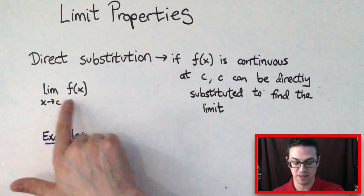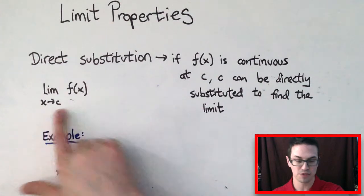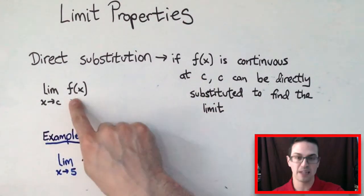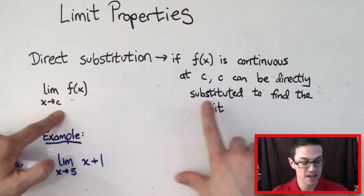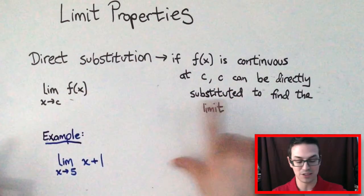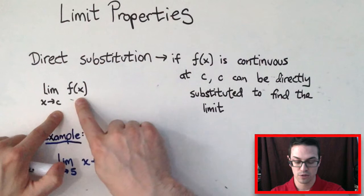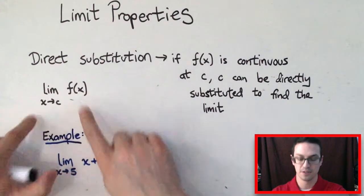So the limit of this function as X gets closer to C. If this function right here is continuous at this value C right here, then C can just be directly substituted into F of X to find the limit.